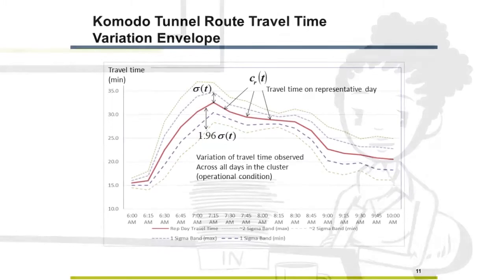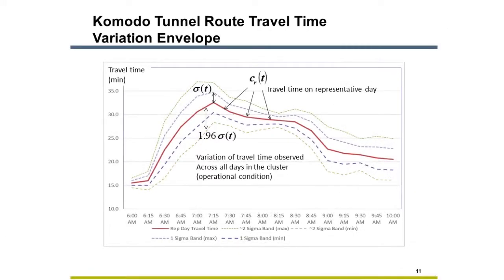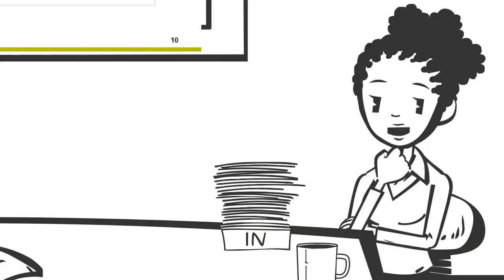Here are the variation envelopes for the Komodo tunnel route. The red line is the representative day. The wider green lines are the thick 1.96-sigma values. The narrower purple lines are the thin 1-sigma bands. What about the other route, across the Victory Island bridge? I'll produce a different set of variation envelopes for that route. The model should produce conforming system dynamics for both routes simultaneously.